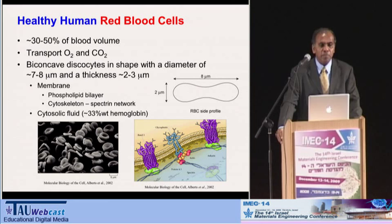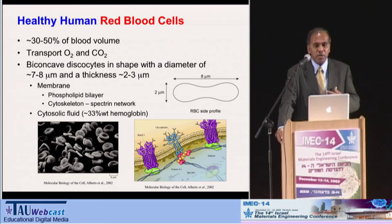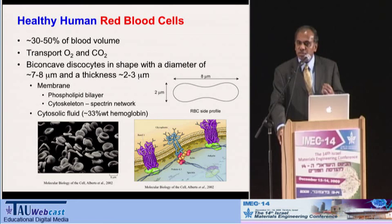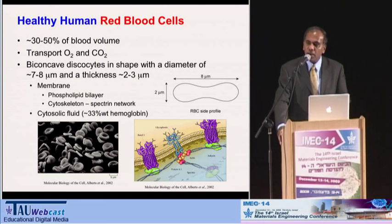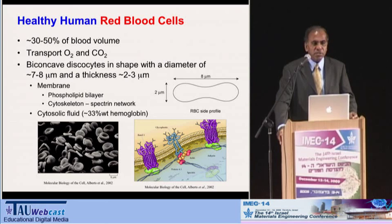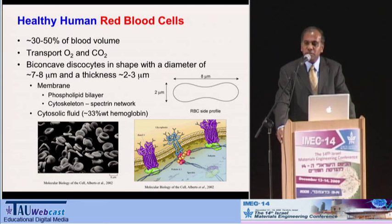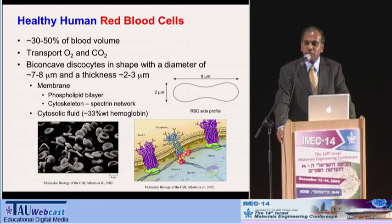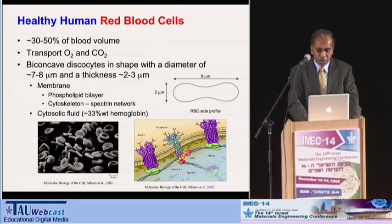Every second, our bone marrow produces several hundred thousand red blood cells and releases them into the bloodstream. The hematocrit, or the concentration of red blood cells in our blood, is about 40% — the range is anywhere from 30% to 50% — and because of that, the color of blood is red. The red blood cell has a unique biconcave or discocyte shape, which is shown in the bottom left figure. The long diameter of the red blood cell is 8 micrometers.